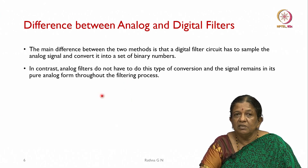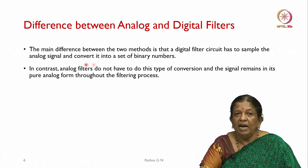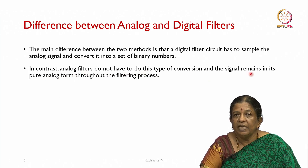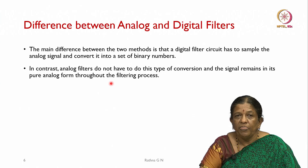The main difference between analog and digital filters is that a digital filter circuit must first sample the analog signal and convert it into binary numbers, whereas analog filters need not perform this conversion and can be used directly.